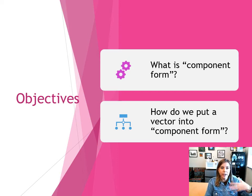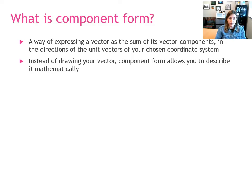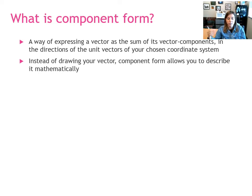This video is a second way of explaining component form, reiterating a lot of the concepts and showing another way to think about and express a vector in component form. Component form means to write the vector as a sum of its vector components along the unit vectors in our coordinate system. We're always using a Cartesian coordinate system, so these unit vectors are called x hat, y hat, and z hat. Any vector can be written as the sum of its vector components.